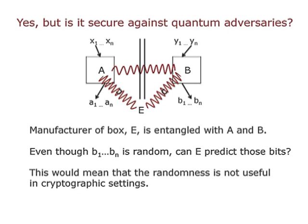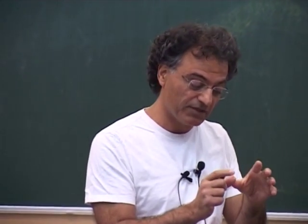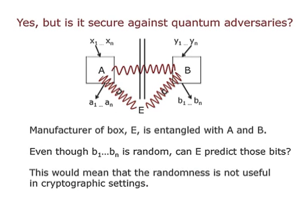You can also ask: is it secure against quantum adversaries? For cryptographic protocols, it's not enough to be random — it also has to be secure, nobody else should be able to guess that randomness. Through cryptographic eyes, whoever made these two boxes could be entangled with them, sharing entanglement with both boxes. So even though that person cannot prevent these boxes from generating randomness, they might be able to guess what the output is, enough to break the security of this random number generator.